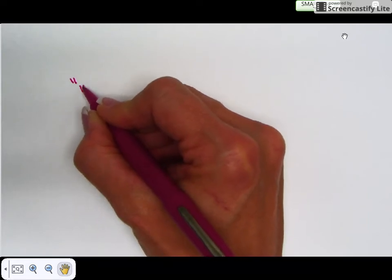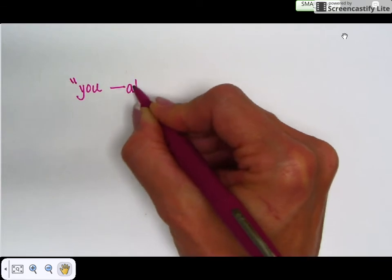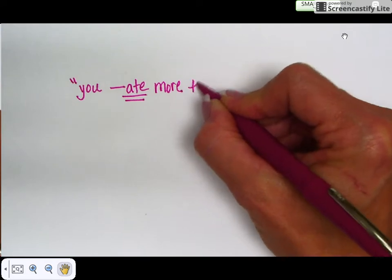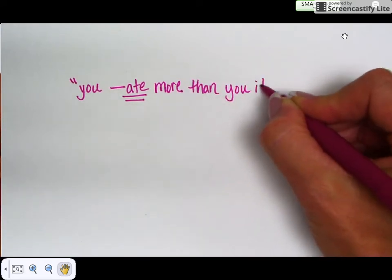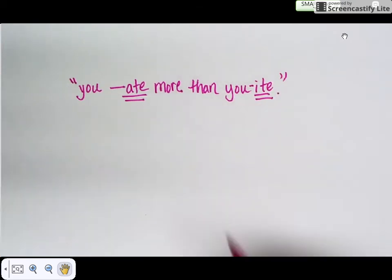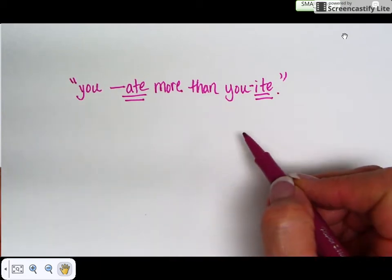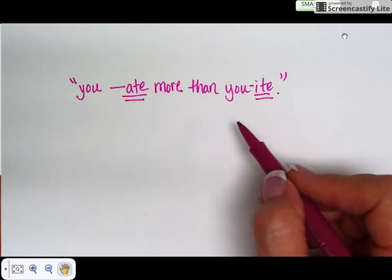This makes not a whole lot of sense right now, but in the context of polyatomic ions it will. So write down this: 'you ate more than you -ite.' Remember -ate and -ite are the common endings, and it has to do with the number of oxygens in your polyatomic ion.